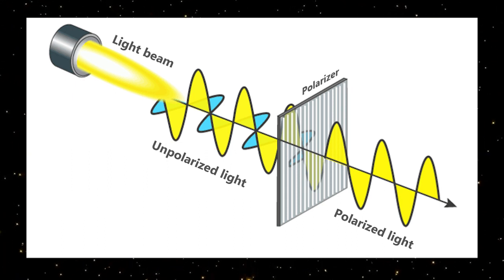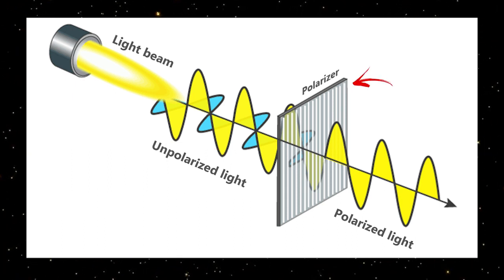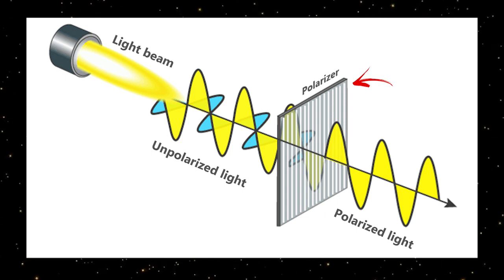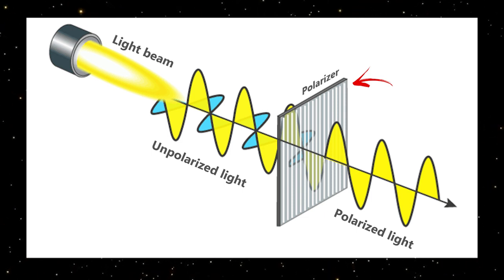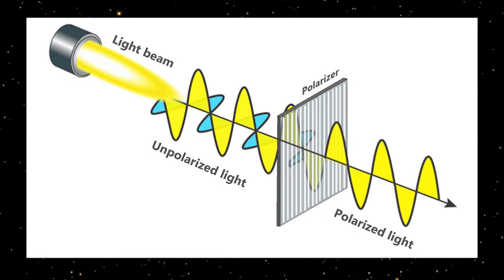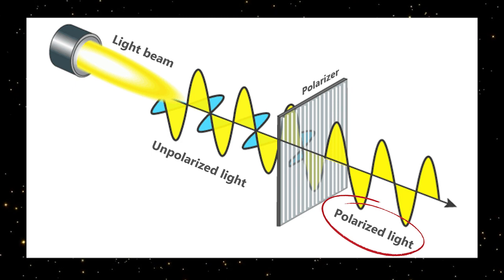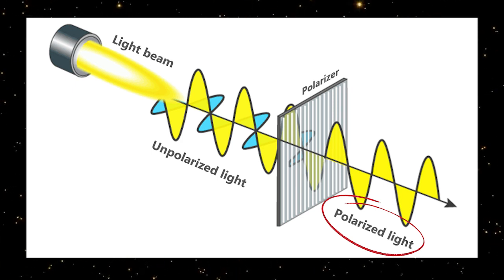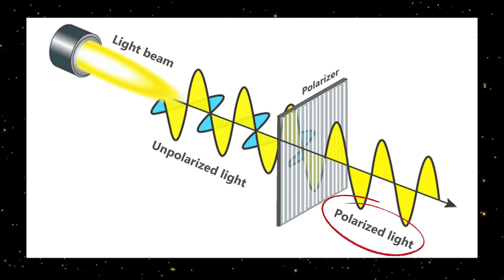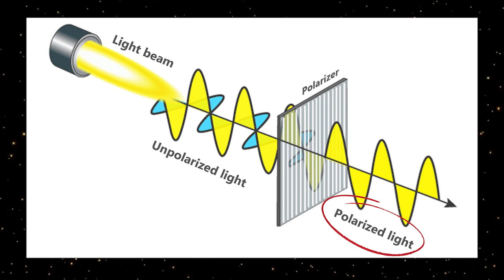However, when light passes through a vertical light filter called a polarizer, only the vertical waves are able to pass through. After passing through the polarizer, the light is only made up of waves that oscillate in one direction, which means that the light is now polarized.